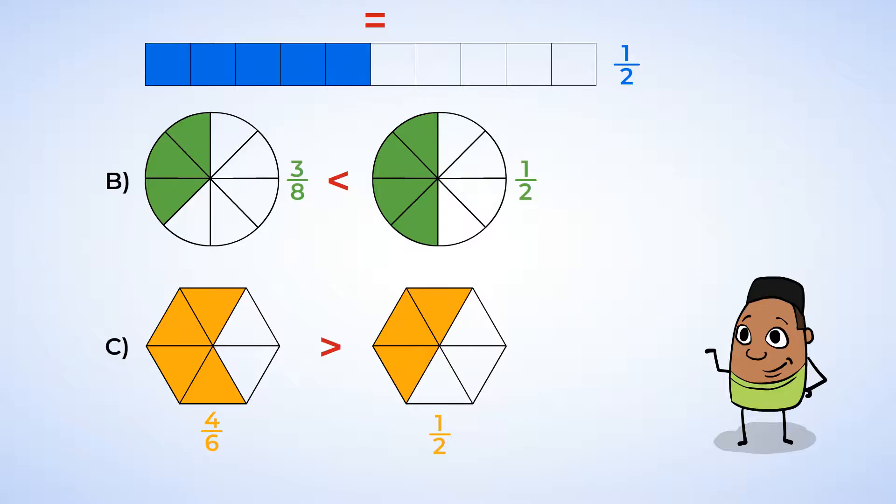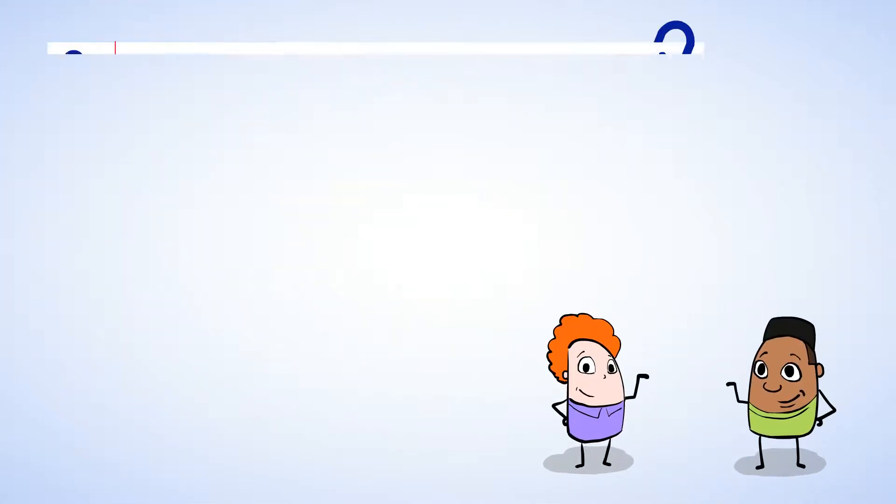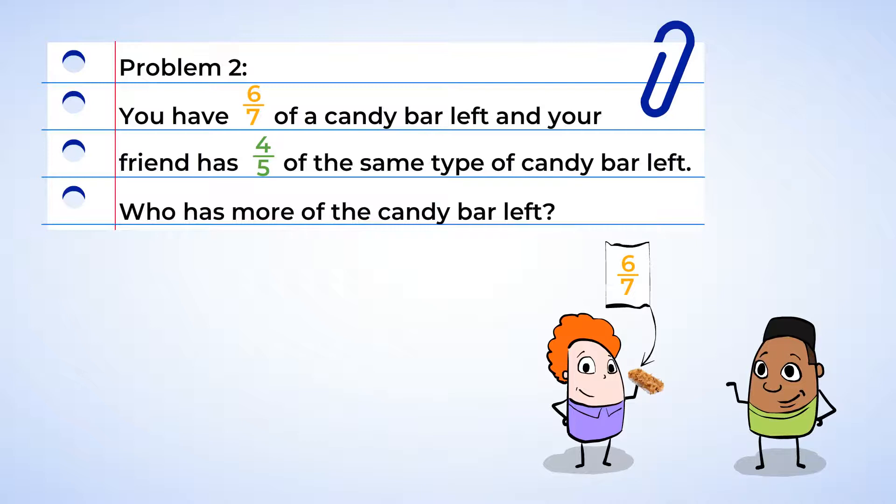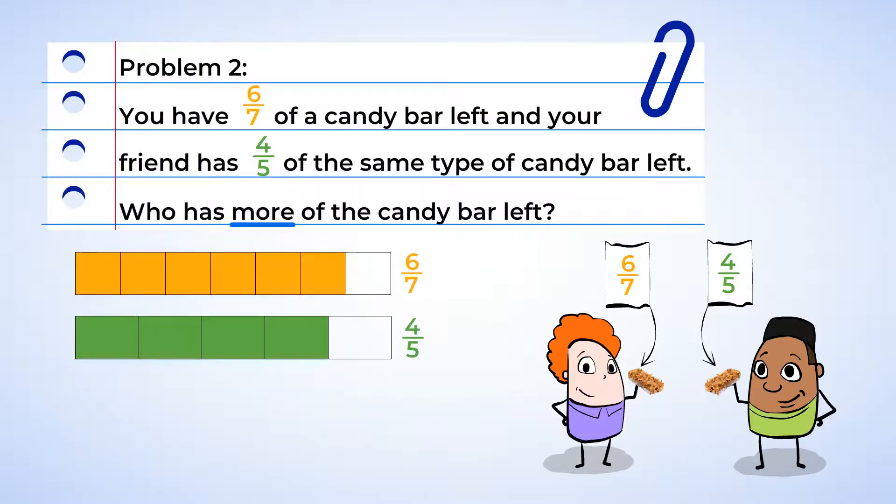What if we compare two or more numbers? Now you have six-sevenths of a candy bar left. And your friend has four-fifths of the same type of candy bar left. Who has more of the candy bar left? Well, let's create a picture to understand these fractions even better. Look at that. Each of the bars has one piece missing. But notice that the fraction with the larger denominator has a piece missing that is actually smaller. A smaller piece missing means that there's more candy left overall. So you have more of the candy bar left.